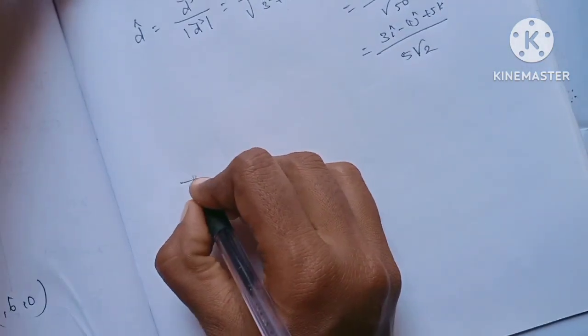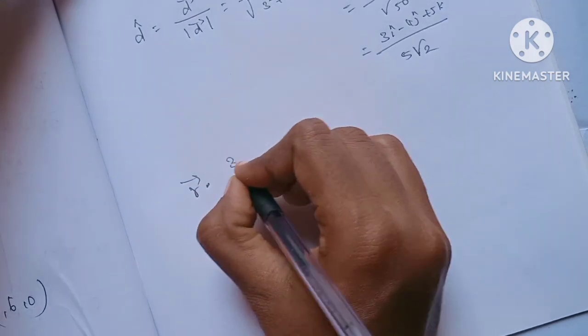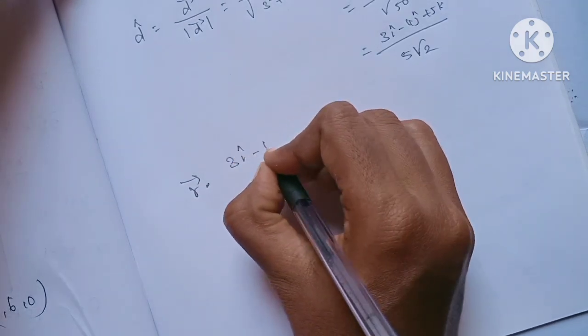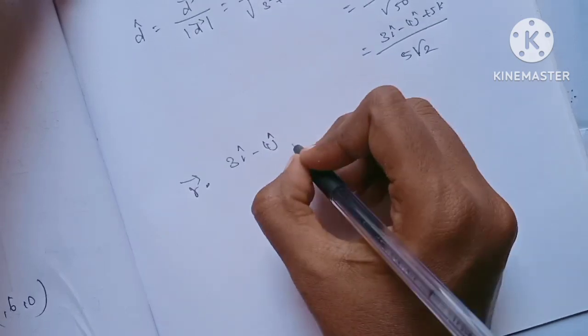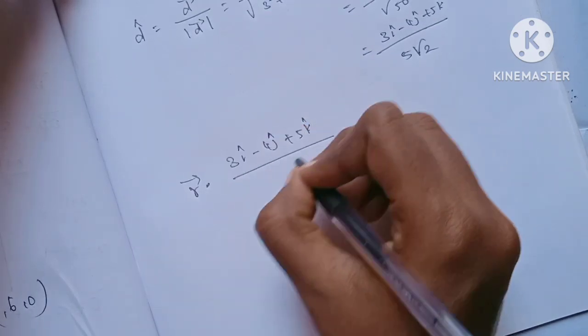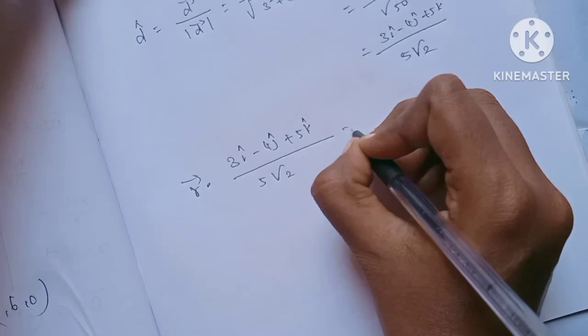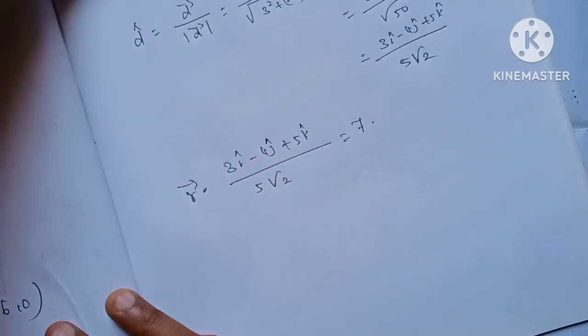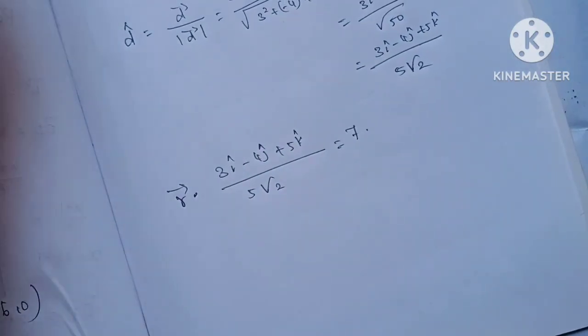Therefore, R vector dot (3i - 4j + 5k) / 5√2 equals 7. This is our vector equation of the plane.